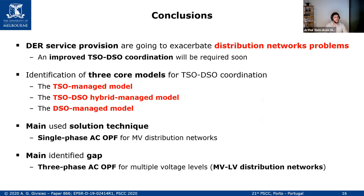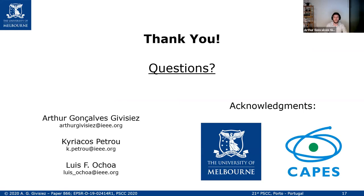To conclude: DR service provision will exacerbate distribution network problems and TSO-DSO coordination will be needed soon. We identified three core models — TSO Managed Model, TSO-DSO Hybrid Managed Model, and DSO Managed Model. The main solution technique used is the single-phase ACOPF for medium voltage distribution networks, and the main gap is the three-phase ACOPF for multiple voltage levels — for example, medium voltage connected to low voltage distribution networks. I would like to thank the University of Melbourne and CAPES Brazil, and also Professor Luis Fernando Scho and Dr. Kriakos Petrus for the collaboration. Thank you.